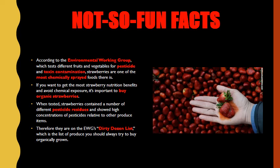Now it's time for the not-so-fun facts. According to the Environmental Working Group, which tests different fruits and vegetables for pesticides and toxin contamination, strawberries are one of the most chemically sprayed foods there is. If you want to get the most strawberry nutrition benefits and avoid chemical exposure, it's important to buy organic strawberries. When tested, strawberries contain a number of different pesticide residues and show high concentrations of pesticides relative to other produce items.